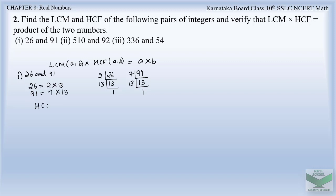Now we find the HCF of these two numbers. The HCF is determined by taking the common factors with the least power. Here 13 is the common factor, and 13 to the power 1 is the least power, so HCF = 13. For the LCM, we take the highest power of the common factors — which is 13 — and also the product of the non-common prime factors, which are 2 and 7.